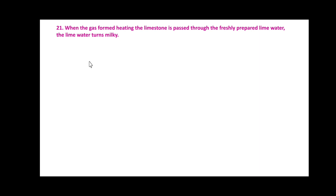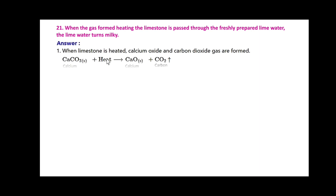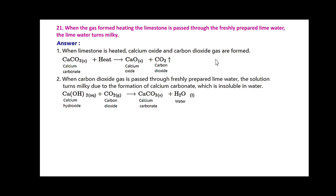When the gas formed by heating limestone is passed through freshly prepared lime water, the lime water turns milky. When limestone is heated, calcium oxide and carbon dioxide gas are formed: CaCO3 + heat → CaO + CO2. When this released carbon dioxide gas is passed through freshly prepared lime water, the solution turns milky due to the formation of calcium carbonate, which is insoluble in water. Ca(OH)2 + CO2 → CaCO3 + H2O.